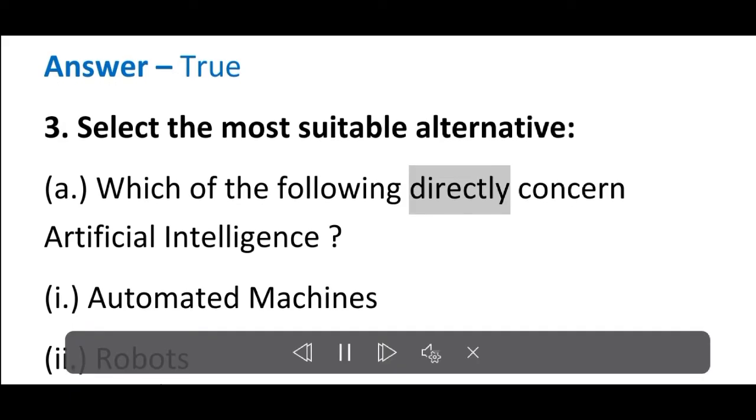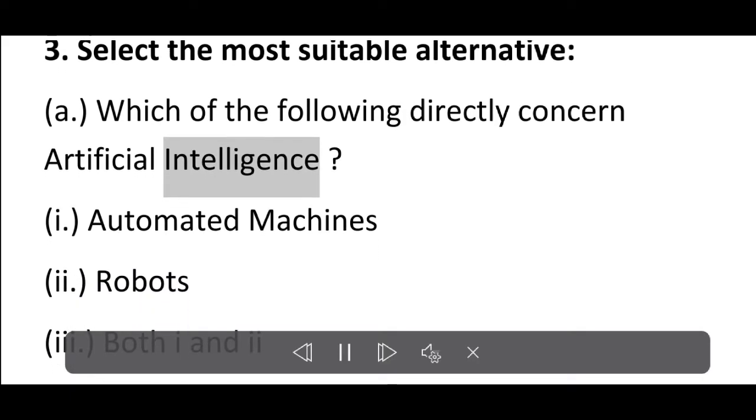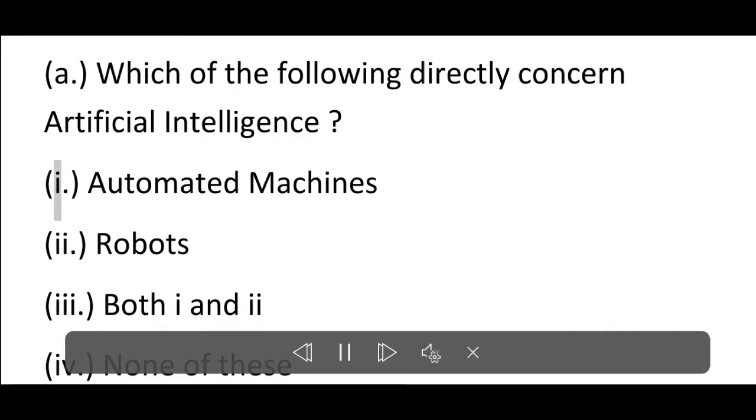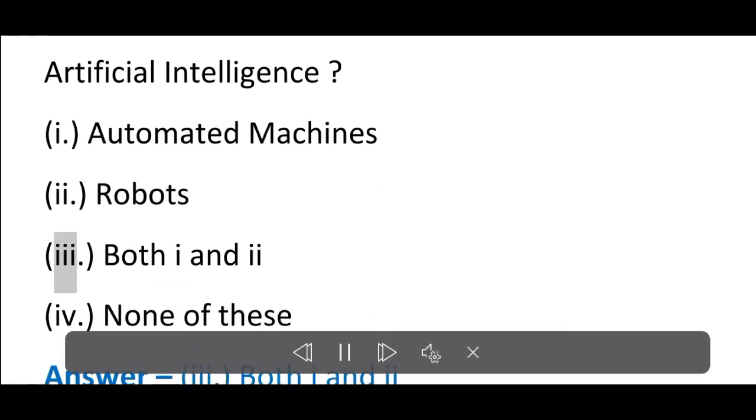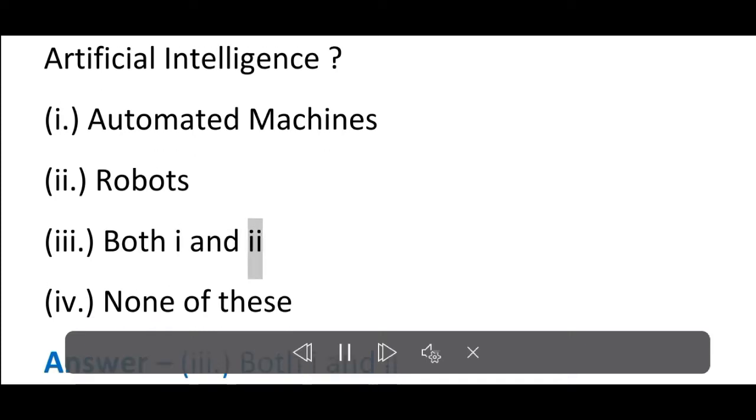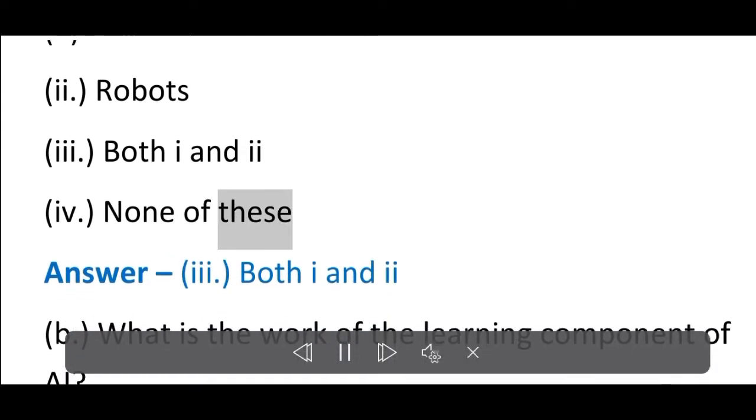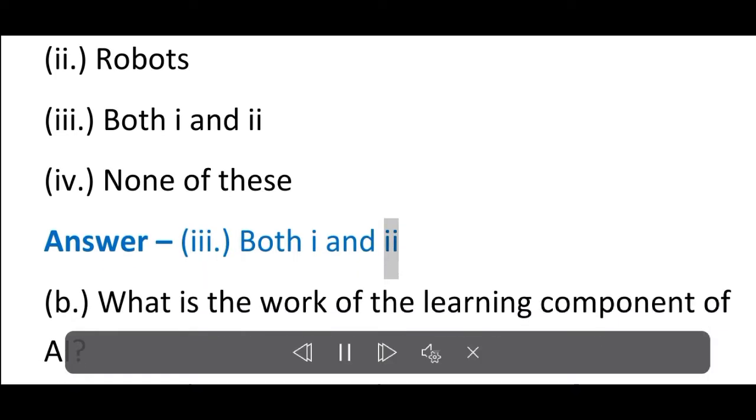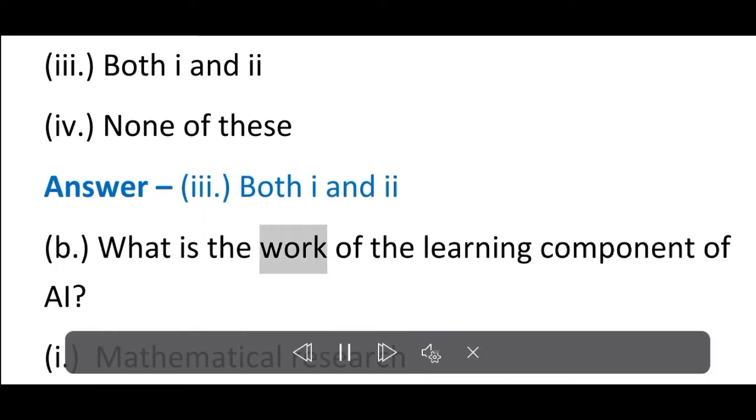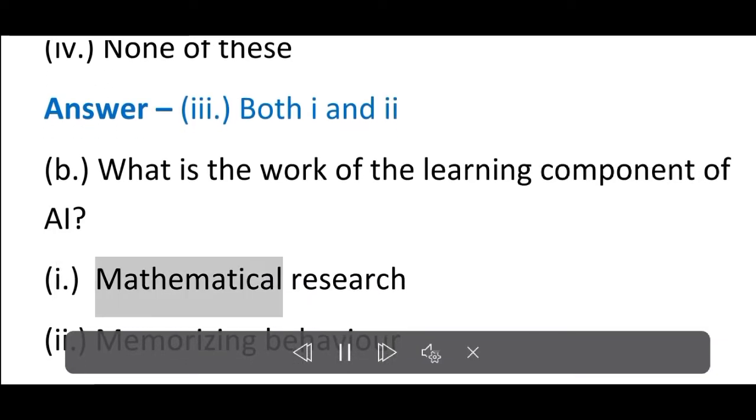3. Select the most suitable alternative. A. Which of the following directly concern artificial intelligence? (i) Automated machines, (ii) Robots, (iii) Both I and II, (iv) None of these. Answer: (iii) Both I and II.